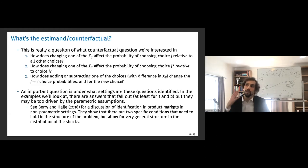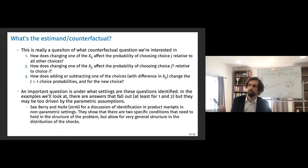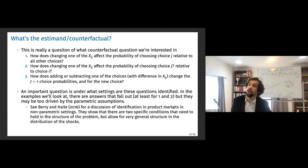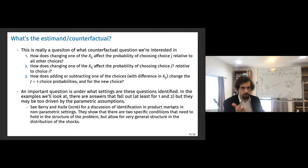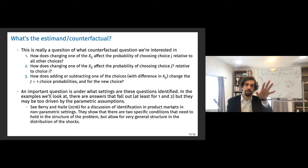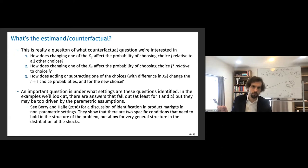It's really a question of what counterfactual you're interested in. If you want to know how changing x_ij affects the probability of choosing j relative to all other choices, that's straightforward from what we just discussed. But if you want how changing x_ij affects the probability of choosing j relative to choice i specifically, that becomes much more complicated and requires more structure — you need to know the marginal probability and divide by a joint probability.